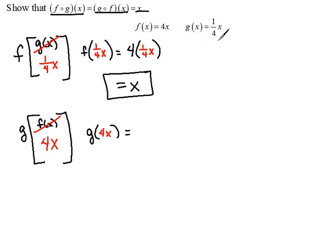The g function right up here says one-fourth times the variable. So one-fourth times the variable, which in our case is going to be four x.